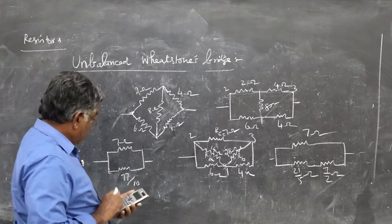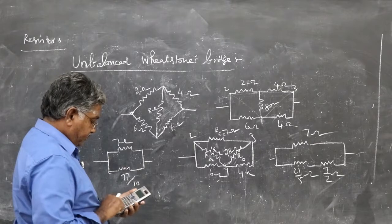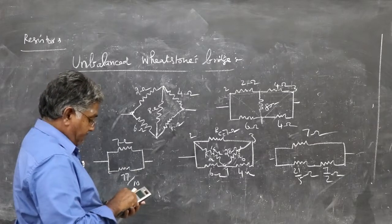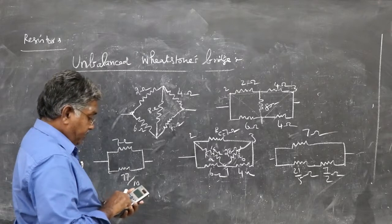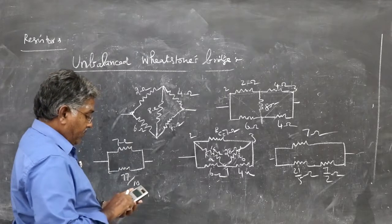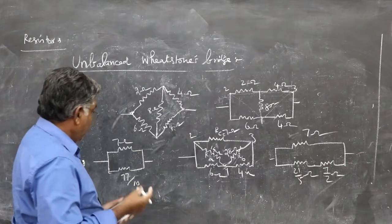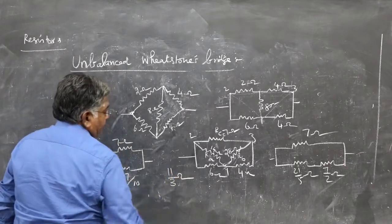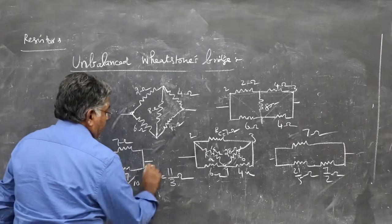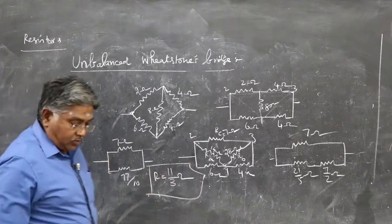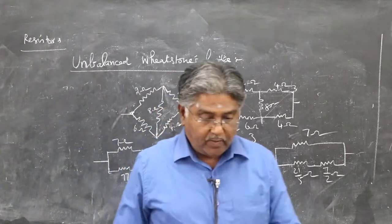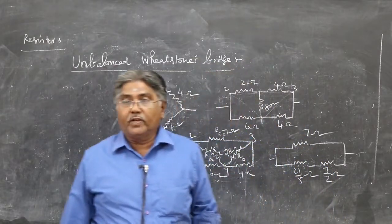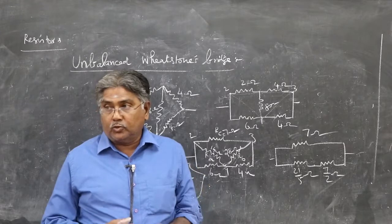77 by 10, so reciprocal: 10 by 77 plus 1 by 7, effective 11 by 3. This is what we also got by the previous methods. So we have seen three different methods to find out the effective resistance across the unbalanced Wheatstone's bridge.